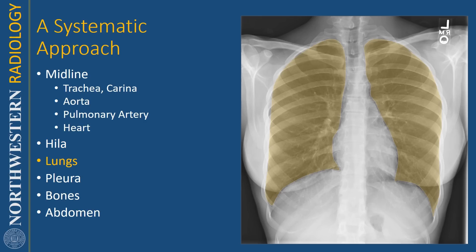Then I look at the lungs in two different ways. First, I zoom in on the right lung and look at that lung individually, looking for nodules, masses, pneumonia, reticulation, and fibrosis. I try to make sure to cover the blind spots, which are the lung apices, the hila, and behind the diaphragm — there's lung that extends behind the diaphragm, and you can see the vessels going behind it.